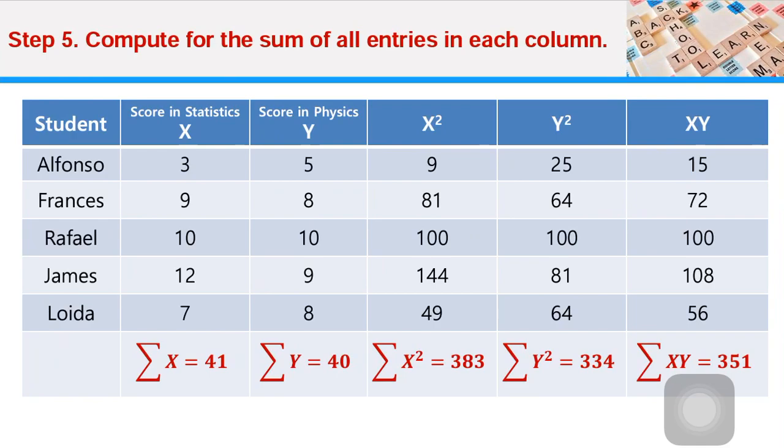For example, let's have the second column: 3 plus 9 plus 10 plus 12 plus 7. The summation of X column is 41.